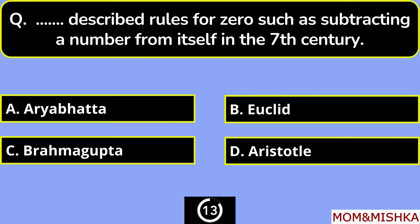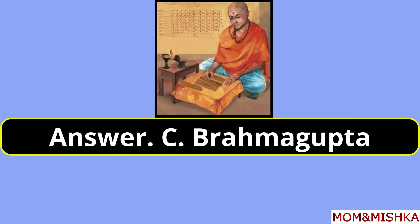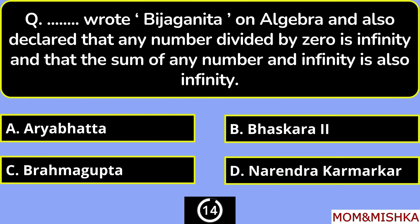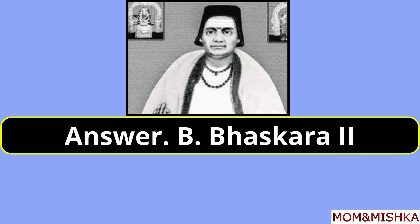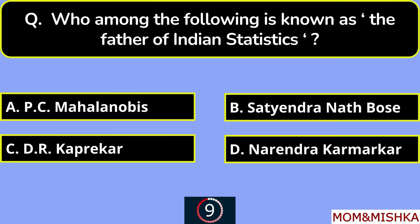Who described rules for 0, such as subtracting a number from itself, in the 7th century? The answer is Aryabhata. Option C. Who wrote on algebra and declared that any number divided by 0 is infinity, and the sum of any number and infinity is also infinity? The answer is Aryabhata. Option B.